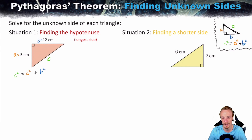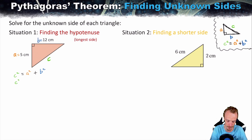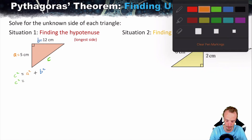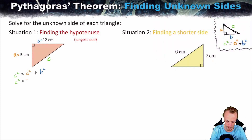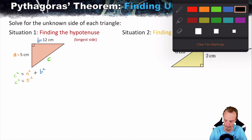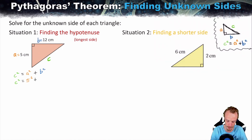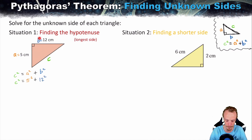Step three is to substitute the information you have into the formula. We're looking for C, so we leave that as C squared. We do know A is 5, so that's 5 squared. And we know B is 12, so that's 12 squared. Note that it works the same if you labelled A as 12 and B as 5 — you end up with the same result.